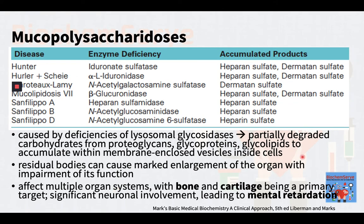Lysosomal enzymes degrade proteoglycans, glycoproteins, and glycolipids, which are brought into the cell by endocytosis. Lysosomes fuse with the endocytic vesicles, and lysosomal proteases digest the protein component. The carbohydrate component is degraded by lysosomal glycosidases. Lysosomes contain both endoglycosidases and exoglycosidases: endoglycosidases cleave the chains into shorter oligosaccharides, then exoglycosidases — specific for each type of linkage — remove the sugar residues one at a time from the non-reducing ends. Deficiencies of lysosomal glycosidases cause partially degraded carbohydrates from proteoglycans, glycoproteins, and glycolipids to accumulate within membrane-enclosed vesicles inside cells, causing marked enlargement of the organ with impairment of its function.